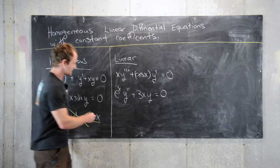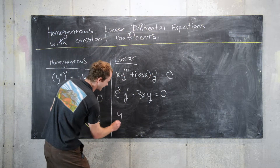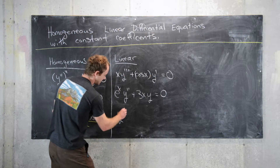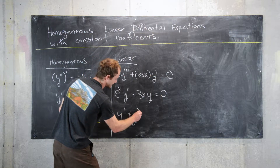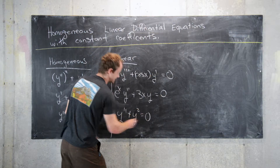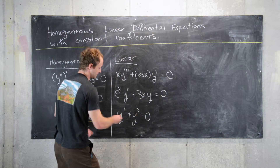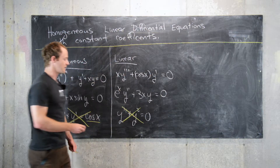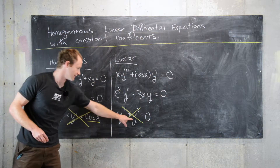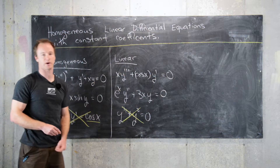A non-example of linearity would be y'' + y² = 0, which is not linear because we have y squared.